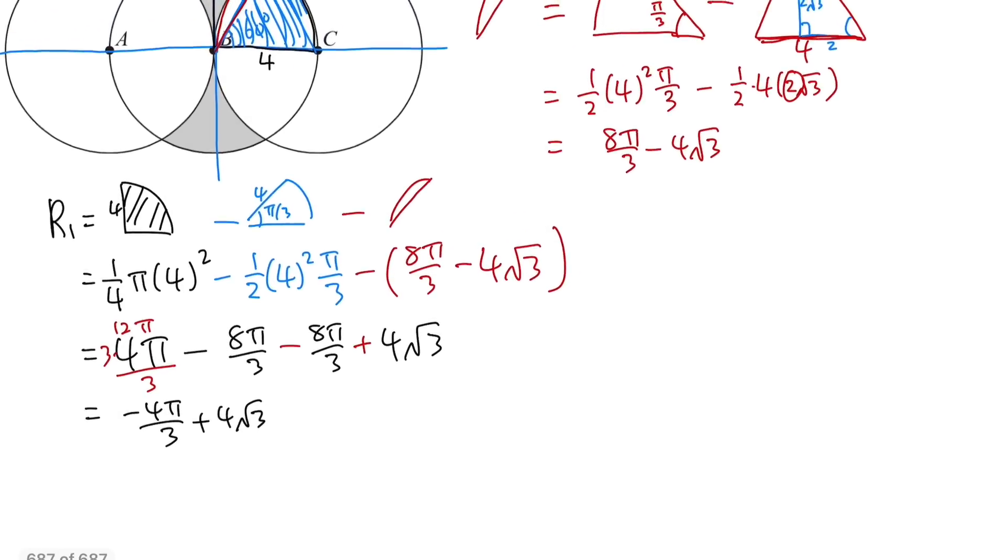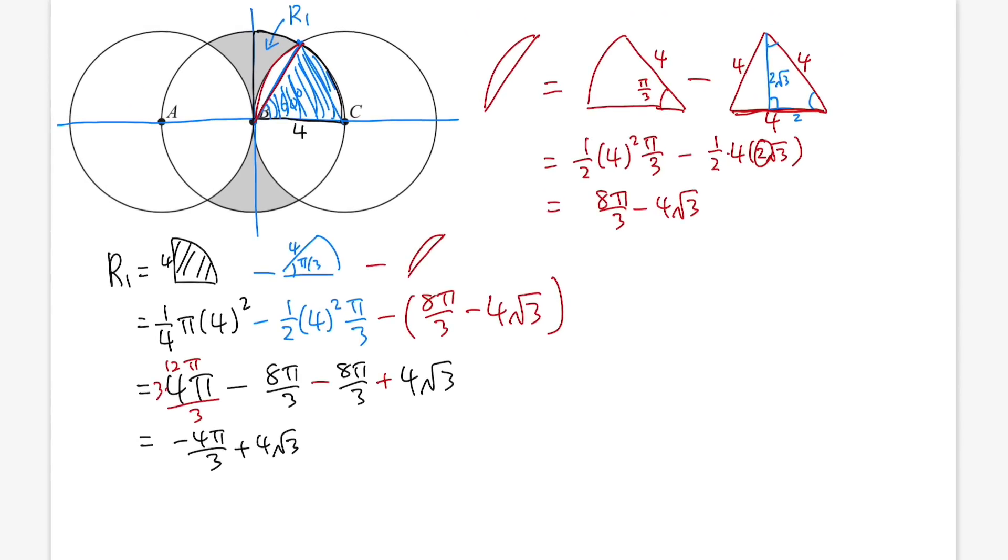So finally, I'm just going to write this down right here. The answer is just going to be 4 times R1, which is 4 times whatever that we got earlier. I will put down 4 square root of 3 first, and then minus 4π over 3. And then right here, I will just write down 16 square root of 3 minus 16π over 3. That has to be the final answer.